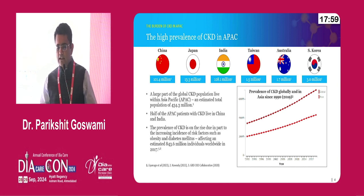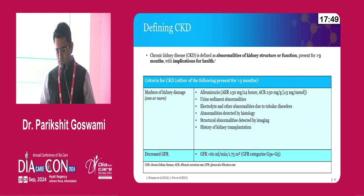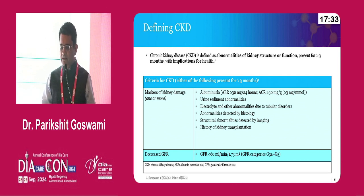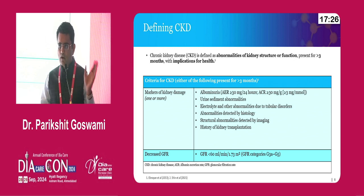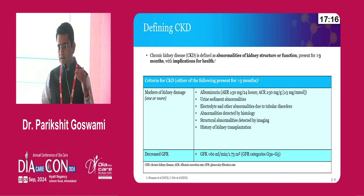Look at the prevalence of chronic kidney disease in APAC countries — half of that prevalence is contributed by China and India. We know how we can define chronic kidney disease: apart from urine sediment abnormalities, electrolyte and other abnormalities, abnormalities detected by histology, structural abnormalities, and history of kidney transplantation. But majority of the time, eGFR and UACR are the two things we always count on to diagnose chronic kidney disease.